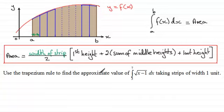Now I've got an example here which should demonstrate the use of this. Use the trapezium rule to find the approximate value of this integral: the integral of the root of x minus 1 with respect to x, going between the limits x equals 3 and x equals 7, taking strips of width 1 unit.